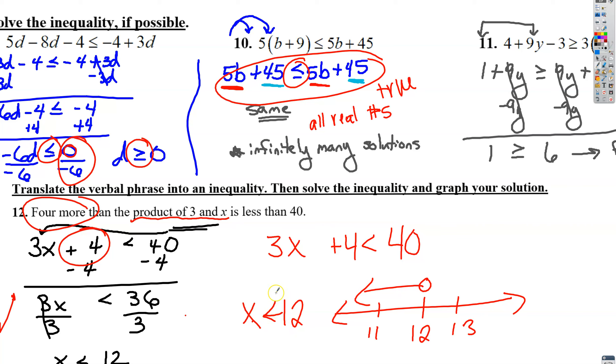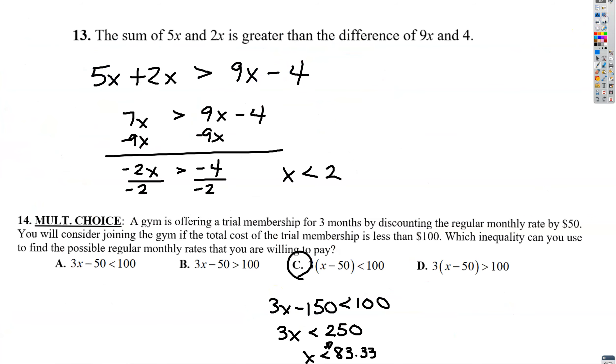All right. The sum of 5x and 2x, sum means add, so that's why he added those numbers, is greater than the difference of 9x and 4. Remember difference means subtract, so 9x minus 4. Combine like terms, we get 7x. Then you want to get the x's on the same side, so he moved the negative 9x to the other side so that it could join the 7 over here.